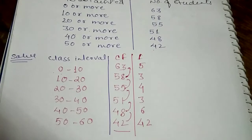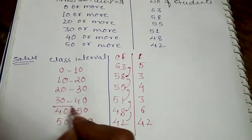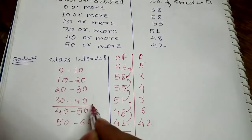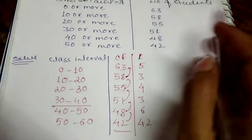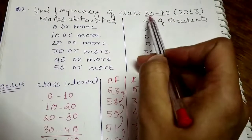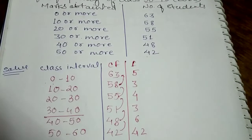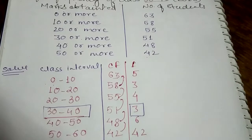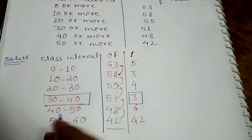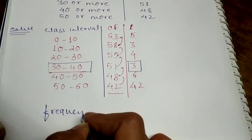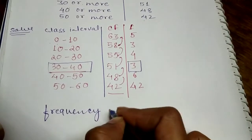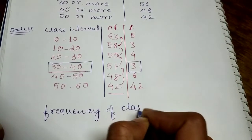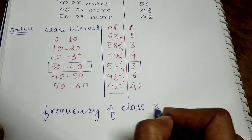Now, what is the frequency of class 30 to 40? This is a very easy question. The frequency of 30 to 40 is 3. You can write the frequency of 30 to 40 as 3.